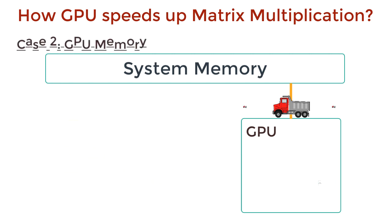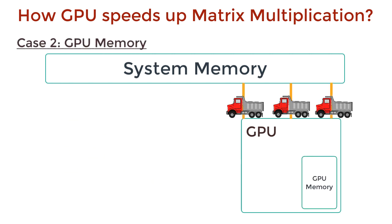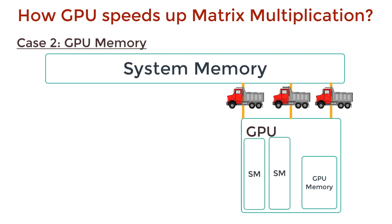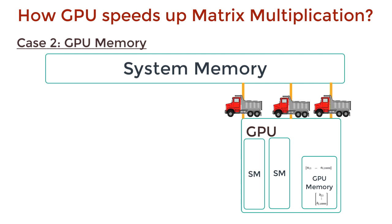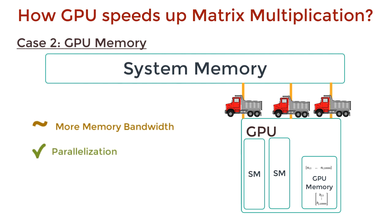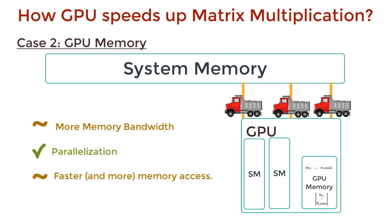That brings us to the second case. We can use the GPU memory, which is shared by the streamlined multiprocessors. The GPU memory may not be large enough to hold both large matrices, but it could be large enough to hold the i-th row of matrix A and the j-th column of matrix B. We could fetch these into the GPU memory, and this way we use more bandwidth and some amount of parallelization to fetch the data, and processing is faster than in the first case with brute force, since now we're using the GPU memory.